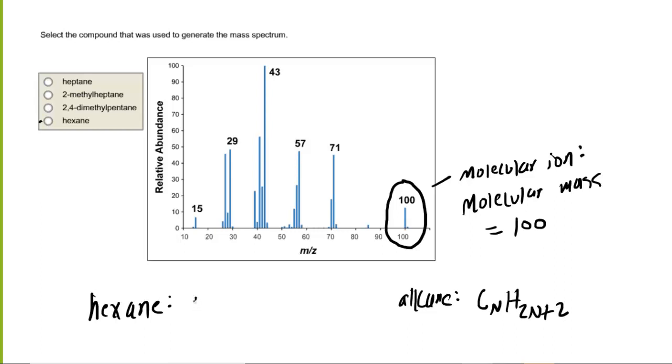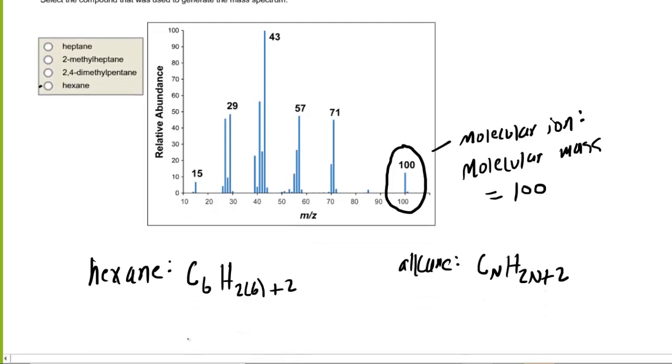So we can take the number of carbons, which is 6, and then also plug that in for the n value for the number of hydrogens. And when we simplify this, we can see that the formula becomes C6H14.